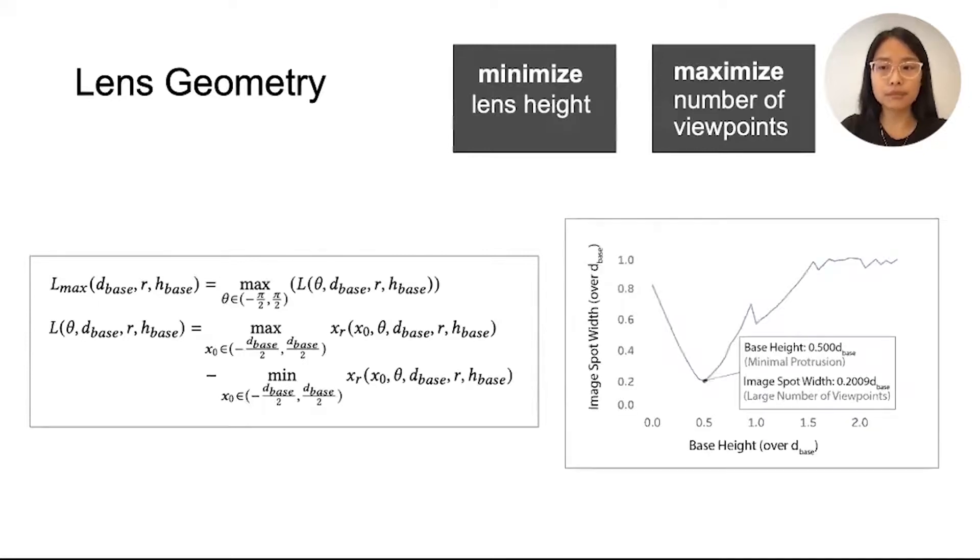We then plotted the relation between the image spot size and the lens's base height. And we then selected the point marked in the plot, which gives us both small lens height and a large number of viewpoints. If you are interested in more detail on the lens geometry calculation, please check our paper.